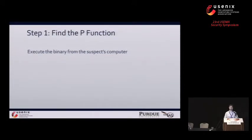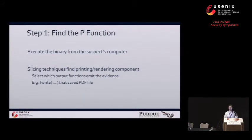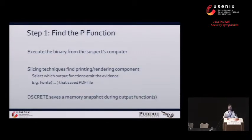So let's look at these two steps. In the first step, the investigator is going to execute that binary from the suspect's computer, and slicing techniques are going to be used to find the entire printing rendering component within that application. During this, the investigator only needs to mark which output functions that application used to emit the evidence they're interested in. For example, they would want to mark the fwrite in that PDF editor that saved the PDF file to disk. Meanwhile, Discrete is going to be saving memory snapshots periodically of that running application, to be used in step two.